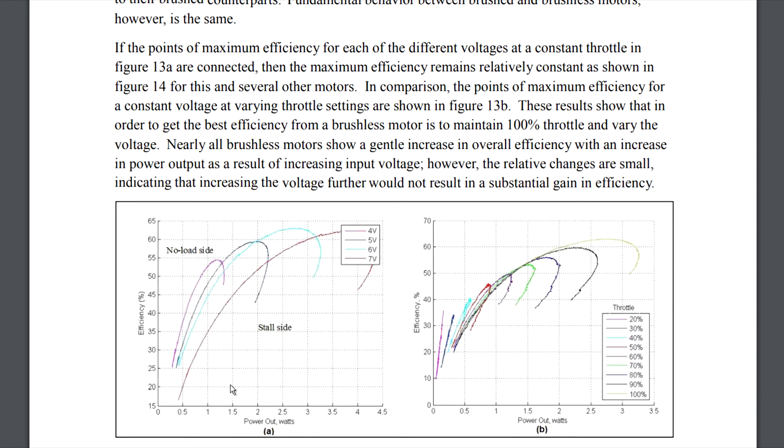If you look at the data they present here, this chart, which happens to be on figure 13 in the report, where they plot the power output of the motor versus the efficiency that it's capable of at different voltages, these 6 and 7 volt traces here definitely reach the highest.